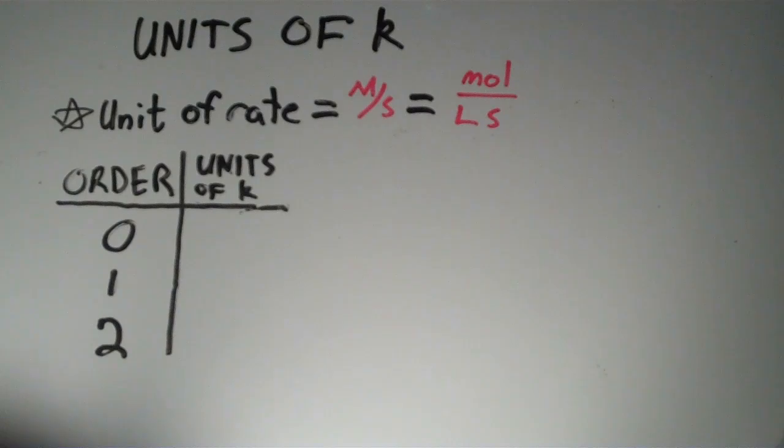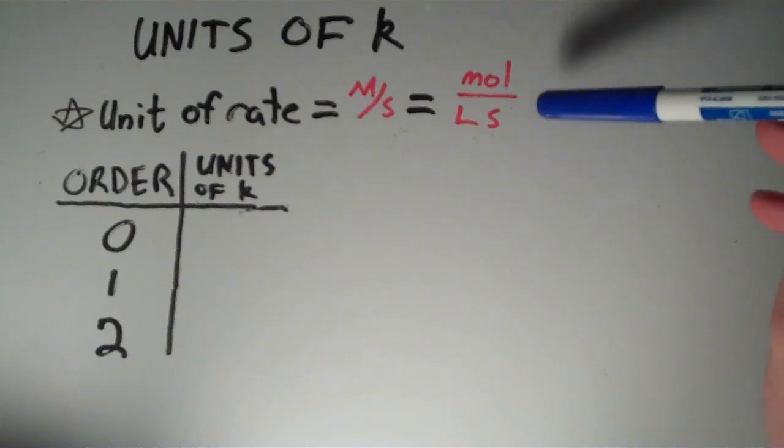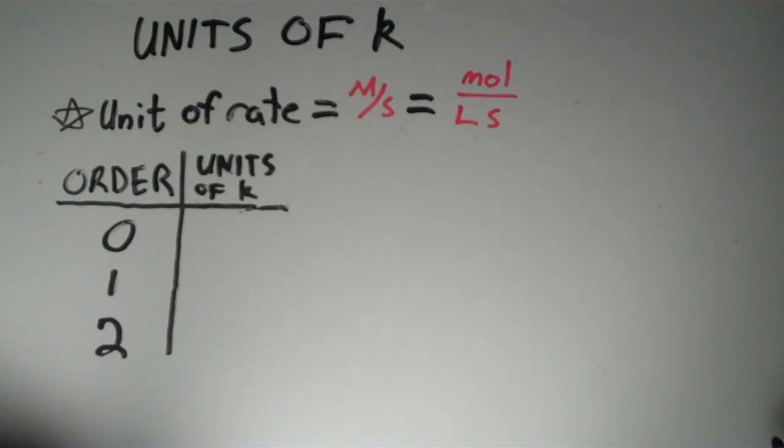The main tip is that the units of rate are always molar per second, or equivalently, moles over liters times seconds. As long as we know the units of the rate and the rate law of the reaction, we can solve for the units of K.